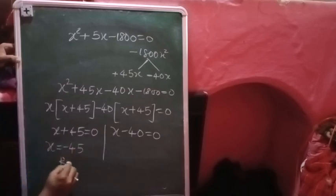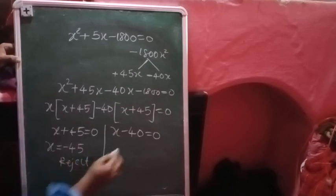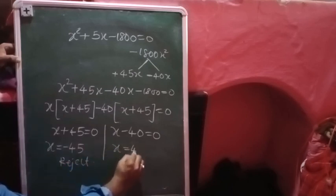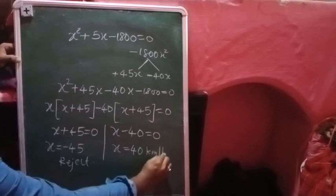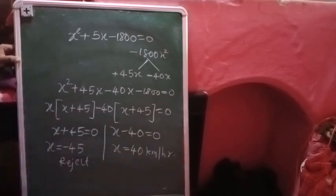X equals to 40, which is our required answer: 40 kilometers per hour. So the speed of the train is 40 kilometers per hour. This is the solution for question number eight.